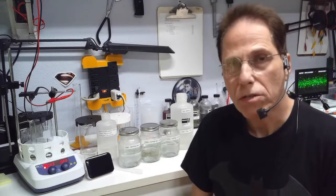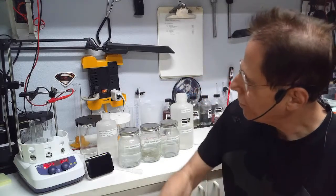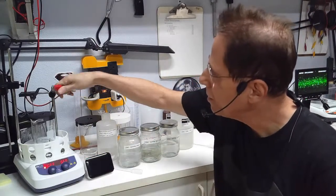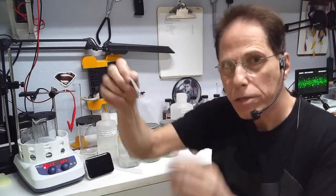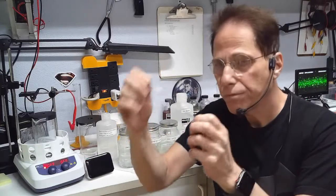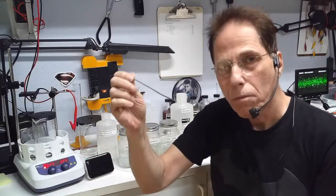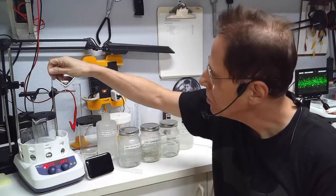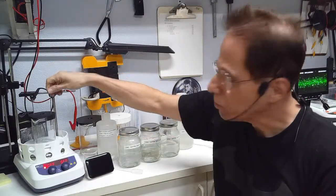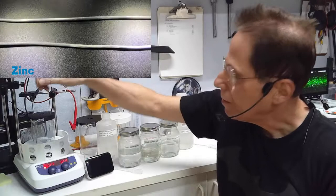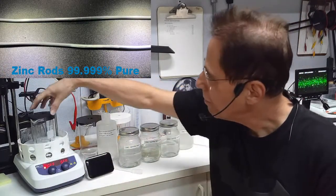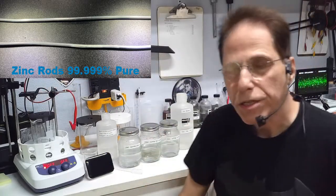Basics of making colloidal zinc: you are going to need zinc rods, two of them, 99.99% zinc rods. You can get them on Amazon, at least that's where I got mine. They will last a long time and zinc isn't too expensive.